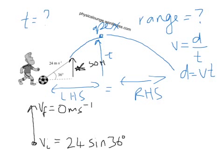The hypotenuse is 24 meters per second. The vertical initial velocity: 24 times sine of 36 degrees gives us 14.1 meters per second.